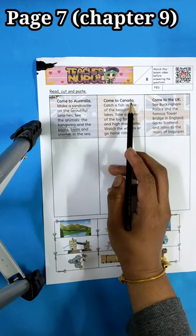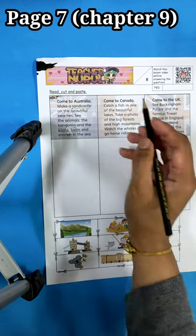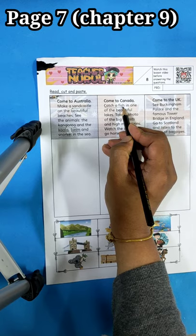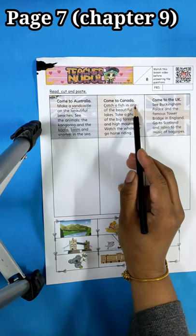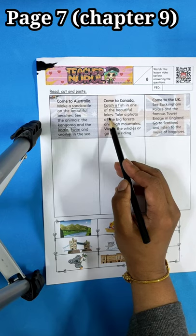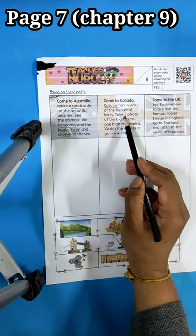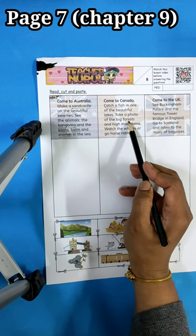Come to Canada. Catch a fish. So catch a fish, the first keyword in one of the beautiful lakes. Lakes. Take a photo of the big forest. Take a photo.